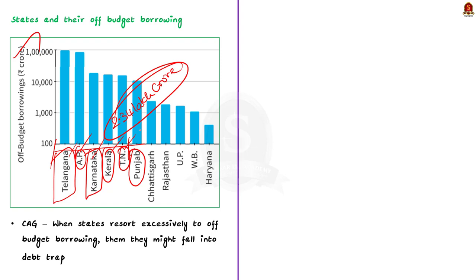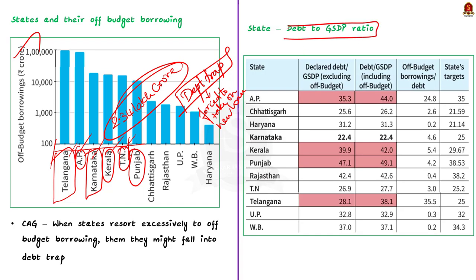The CAG, while presenting this data, mentioned that resorting to off-budget borrowing might push the states into a debt trap. A debt trap is a situation where a government is forced to take on new loans simply to repay existing ones — where debt obligations exceed loan repayment capacity. The article also provides data regarding the debt-to-GSDP ratio of states. States have fixed a target debt-to-GSDP ratio to ensure stable financial conditions.